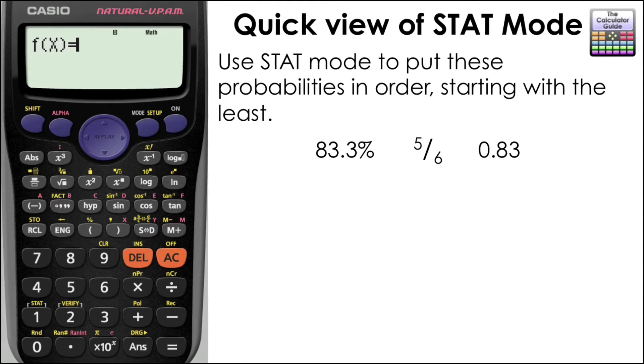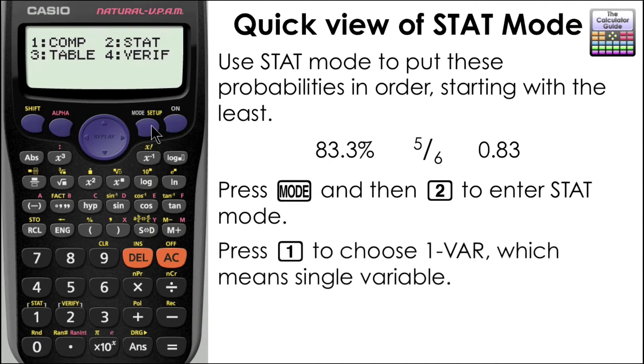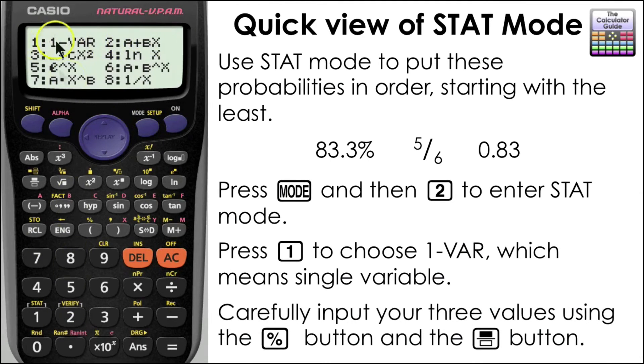We can also use STAT mode to put a fraction, decimal, and percentage probability into order, starting with the least. The probabilities are listed here. Press MODE and then 2 to enter STAT mode, and press 1 to choose 1-VAR or single variable.